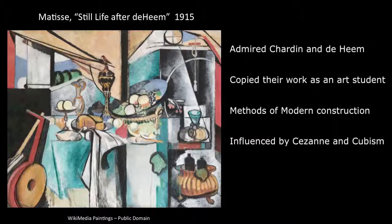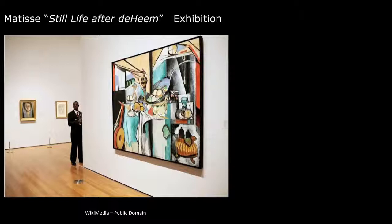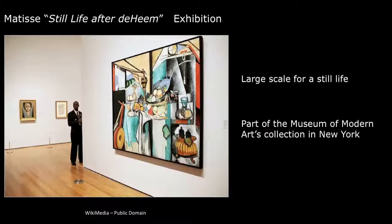Matisse laid out the composition in a grid-like pattern and invented abstract images within each area. Along with many other modern artists, Matisse was primarily concerned with the formal composition or arrangement of lines, shapes, colors, textures, and spatial relationships. Matisse was not attempting to paint a naturalistic representation of what he observed; he wanted to paint his emotional reaction to the world, not the world itself. Matisse's advice to painters was: seek the strongest color effect possible — the content is of no importance. Notice the large scale of the painting, similar to the size of de Heem's original painting that inspired Matisse. This painting is now part of the Museum of Modern Art's collection in New York City.